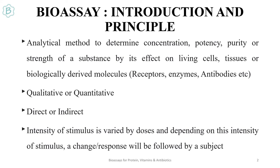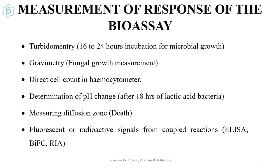Here on your screen are different techniques and methods used for measurement of responses in different bioassays. You can measure through turbidometry, taking absorbance at different times to measure microbial growth, or measure the change in mass of fungal growth in a bioreactor through gravimetry, or measure the increase in cell count through a hemocytometer, or measure the pH change with respect to growth in lactic acid bacteria, or measure the diameter of the diffusion zone as seen in antibiotic susceptibility testing — this zone is a death zone where microbes do not grow.